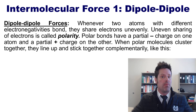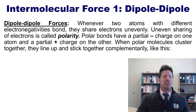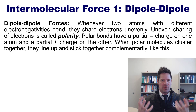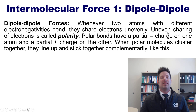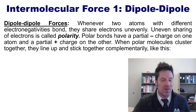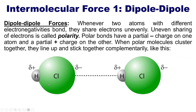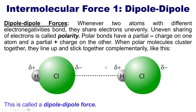When polar molecules — that is, molecules which as a whole have uneven sharing of electrons — cluster together, they line up and stick to each other complementarily, like this example of HCl. The partial minus on the chlorine sticks to a neighboring partial plus on a hydrogen of a neighboring molecule, kind of like magnets. This type of attraction is called dipole-dipole force, and it gives HCl its boiling or melting point.